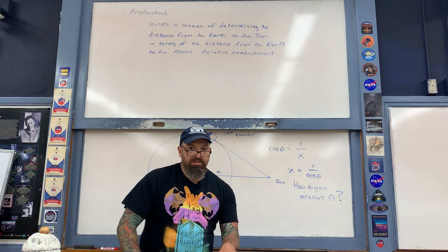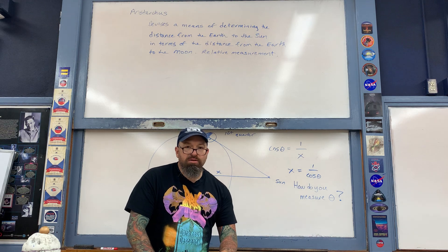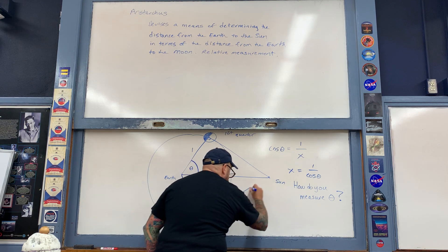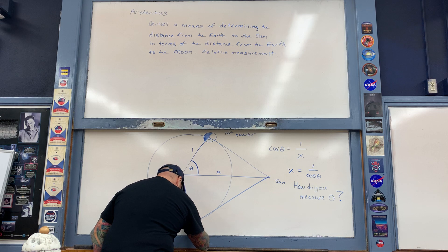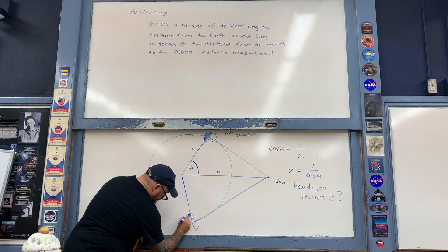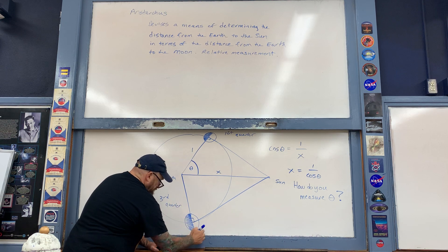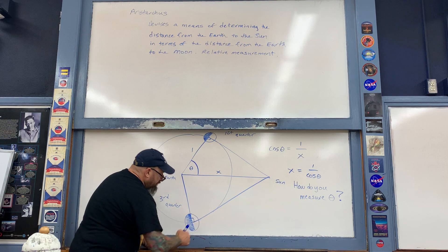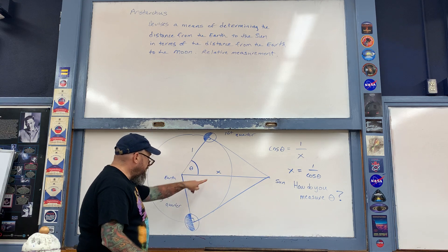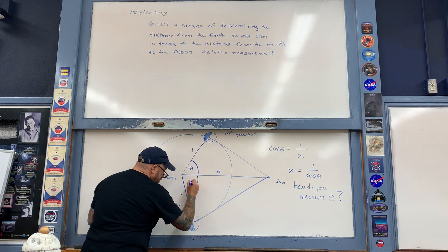Here's how Aristarchus makes this measurement. He says: don't just look at the moon during first quarter, but take a look at it at third quarter as well — that's down here on the diagram. This gives us another right triangle; here is third quarter moon. By assuming the moon's orbit about the Earth is a circle, this means the two triangles are congruent to each other. They share the same hypotenuse, this side equals 1, and therefore this is the same angle theta.